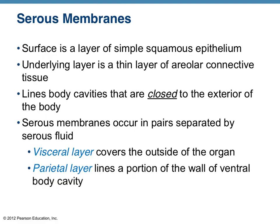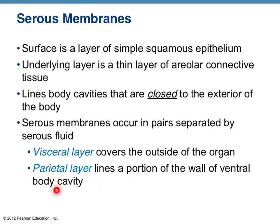The third type of epithelial membrane is a serous membrane. Like mucous membranes, we classify it by what type of cavity it lines — but serous membranes line body cavities that are closed to the exterior of the body, making them truly internal membranes. All serous membranes occur in pairs: the visceral membrane covers the outside of an organ, while the parietal membrane lines the inside of a body cavity.